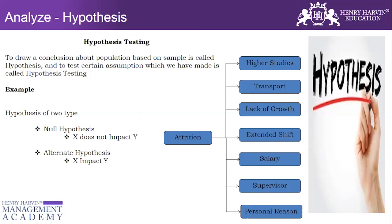The second type is the alternate hypothesis, which means that X has an impact on Y. For example, if we do hypothesis testing of transport versus attrition and get a result of alternate hypothesis, we would say that transport has a significant impact on attrition. That is the alternate hypothesis.